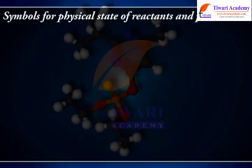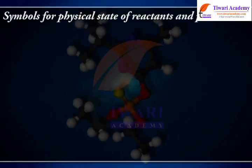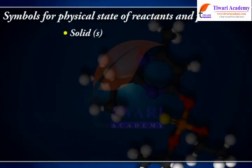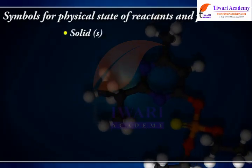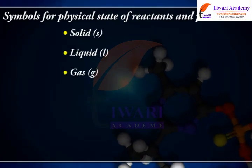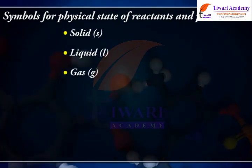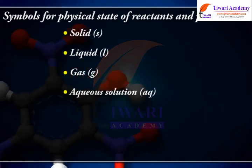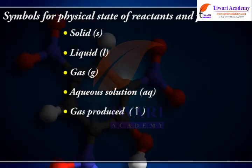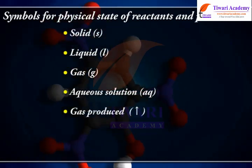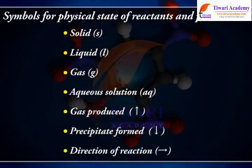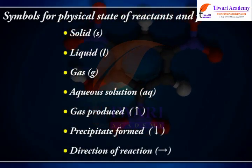Symbols for the physical state of reactants and products: Solid (S), Liquid (L), Gas (G), Aqueous solution (AQ). Other notation includes: gas produced, precipitate formed, direction of reaction, and precipitation.